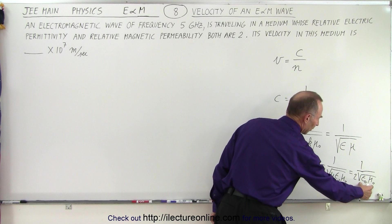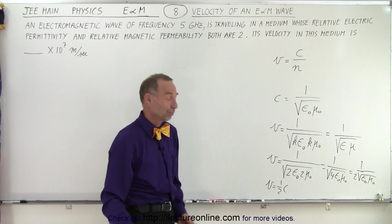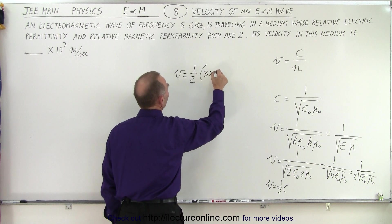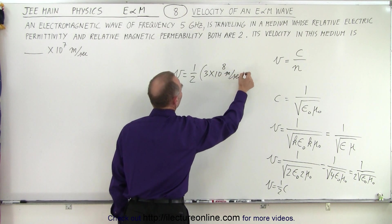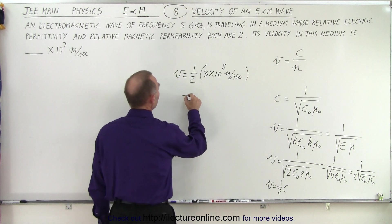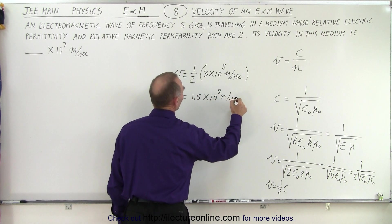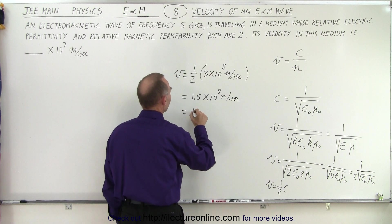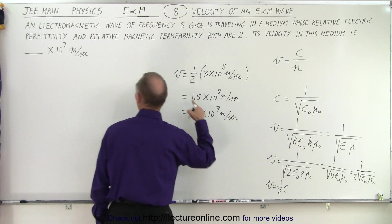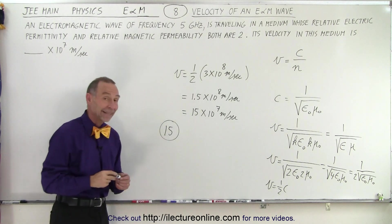Since 1 over the square root of ε₀μ₀ equals the speed of light, we're talking about half the speed of light. So the velocity equals one half times 3×10⁸ meters per second, which is 1.5×10⁸ meters per second. Converting that to units of 10⁷ meters per second gives us 15×10⁷ meters per second, so the answer that goes in the blank is 15.